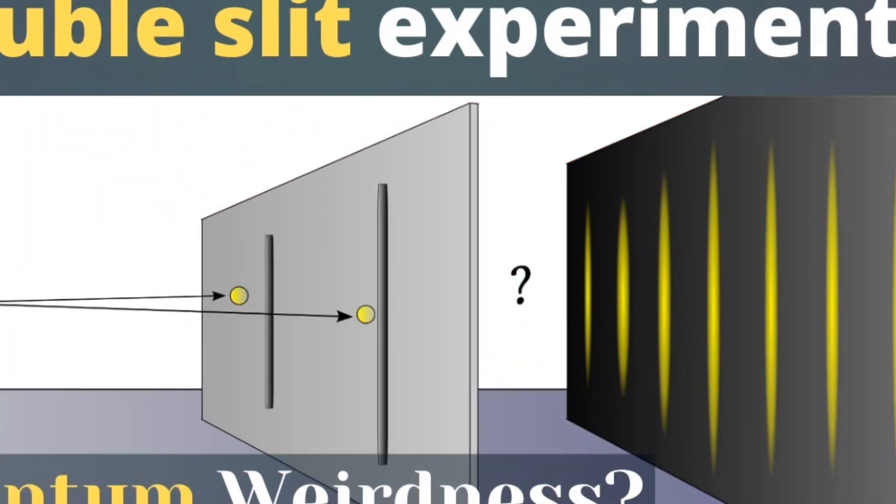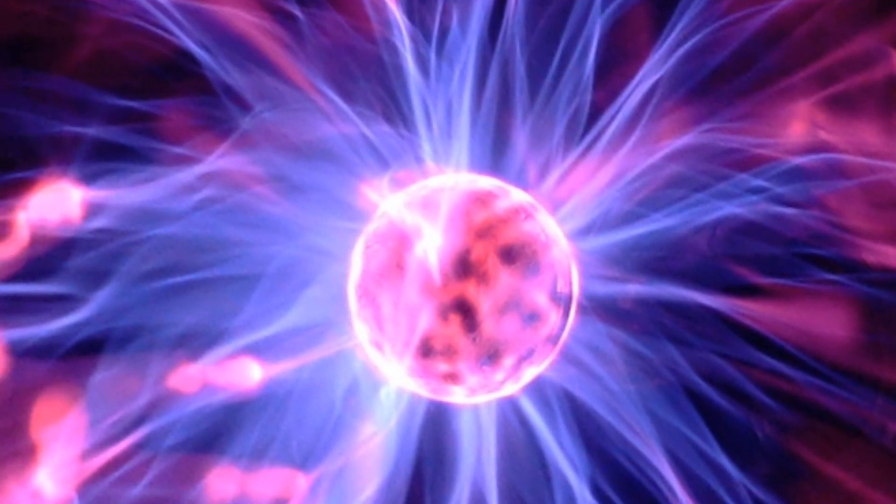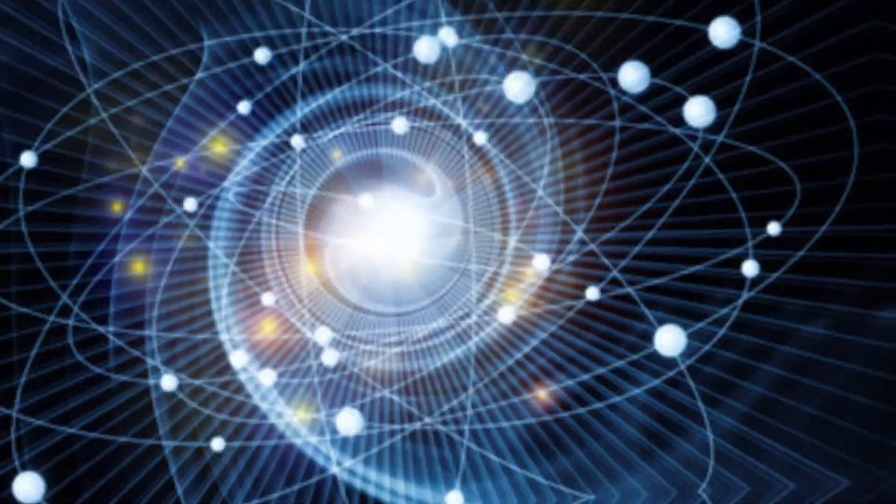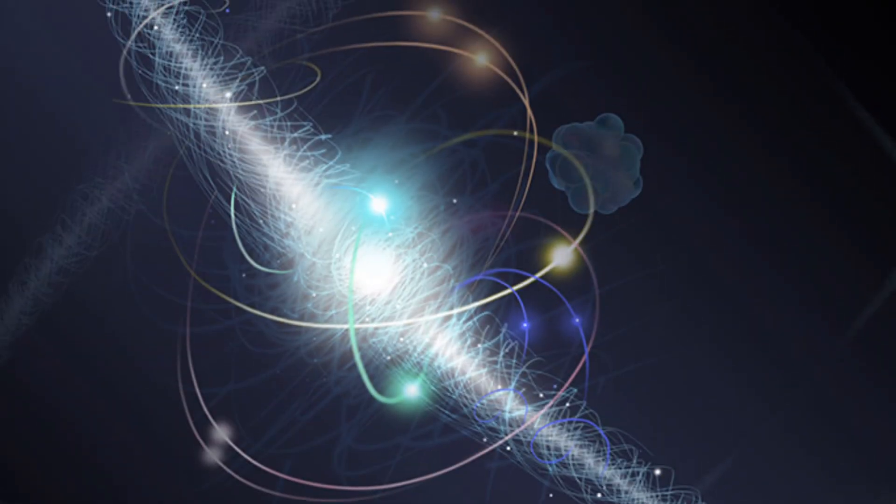A tiny particle, like an electron, though, can show dramatic evidence of its dual nature. If we shoot electrons one at a time at a set of two narrow slits cut in a barrier, each electron on the far side is detected at a single place at a specific instant, like a particle.